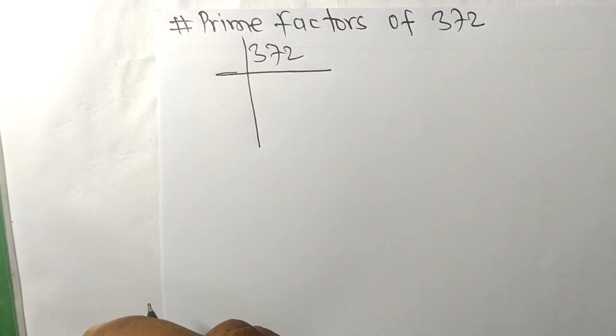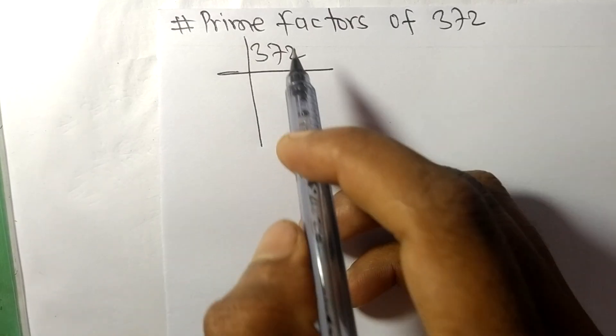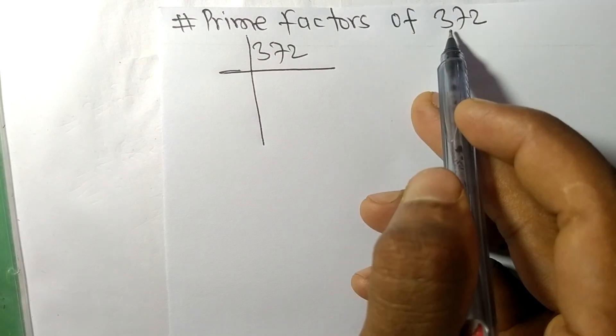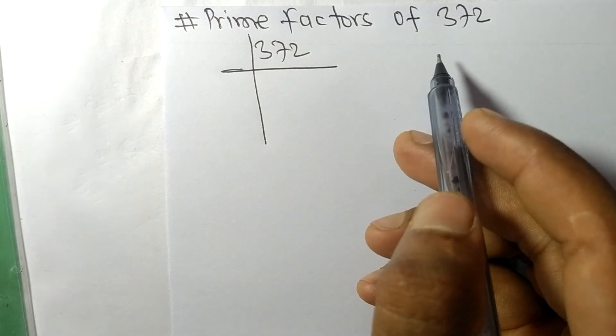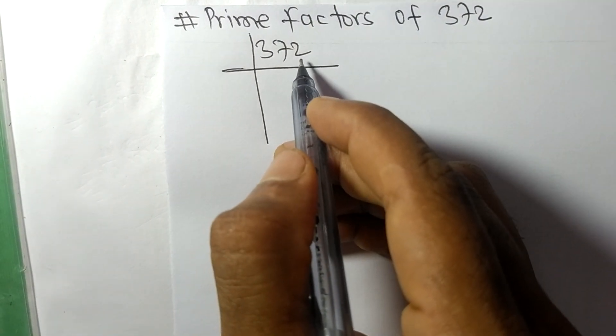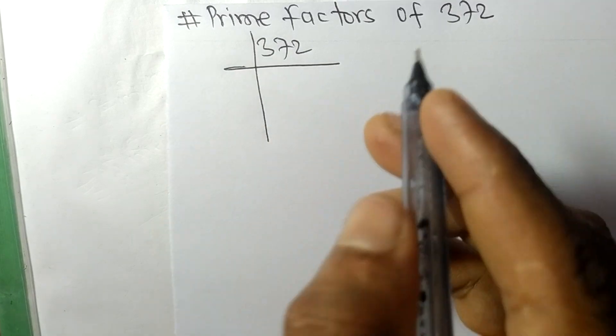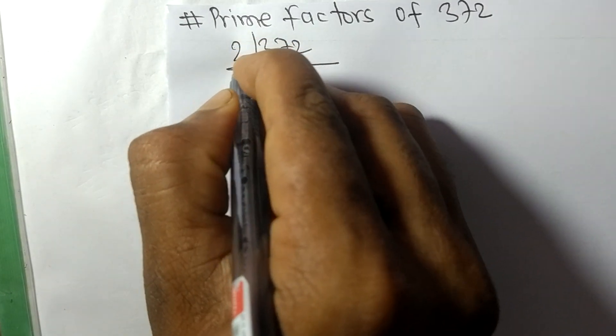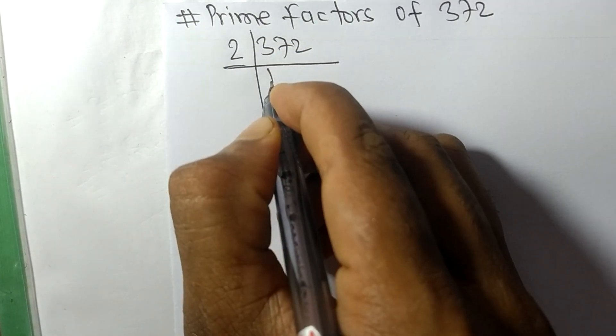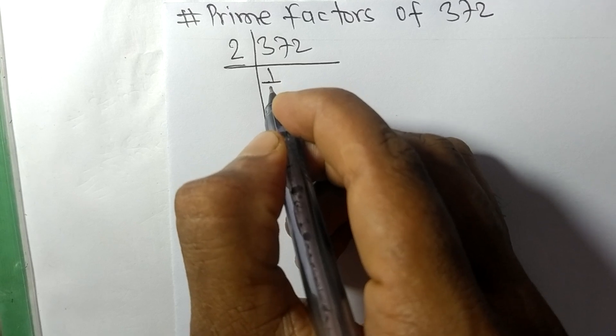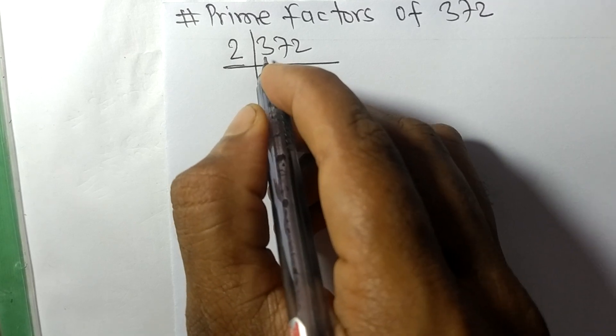Today in this video we shall learn to find the prime factors of 372. It ends in 2, so the whole number is divisible by 2. We divide: 2 times 1 equals 2 remainder 1, giving us 17.